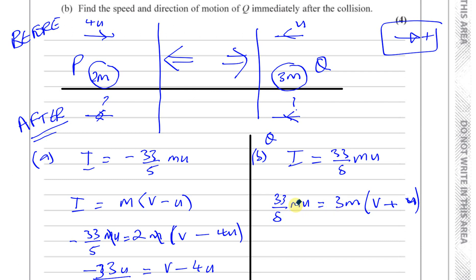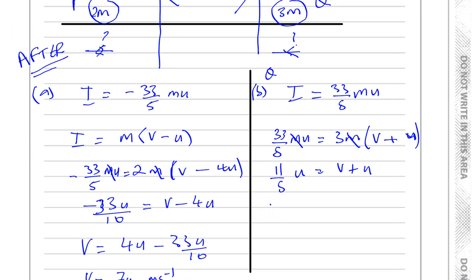So this time, your V for Q is going to be 11 over 5u minus u. That's like 11 over 5u minus 5 over 5u, which is 6 over 5u.